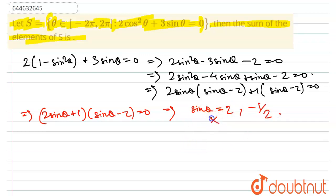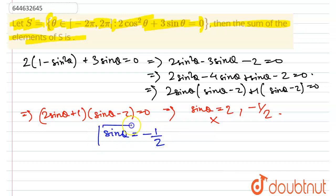Now sinθ = 2 cannot be possible because sinθ is always less than or equal to 1. So we focus on sinθ = −1/2 as the valid solution.